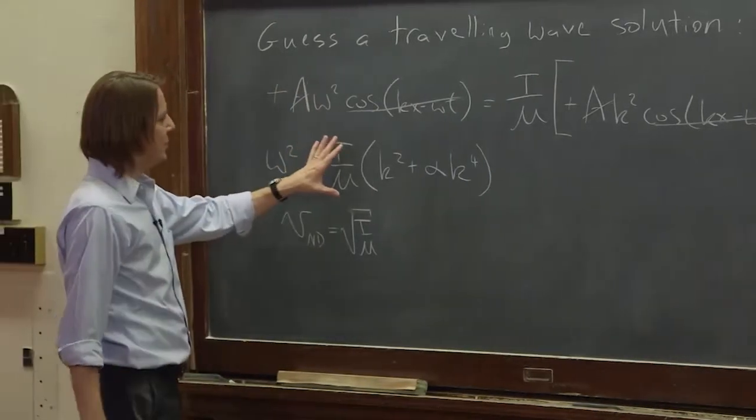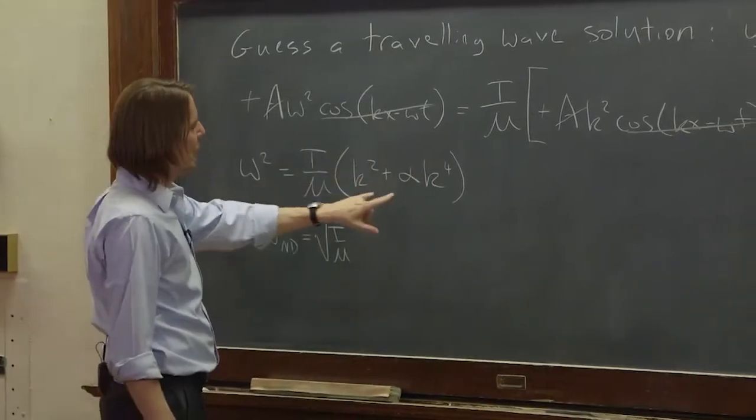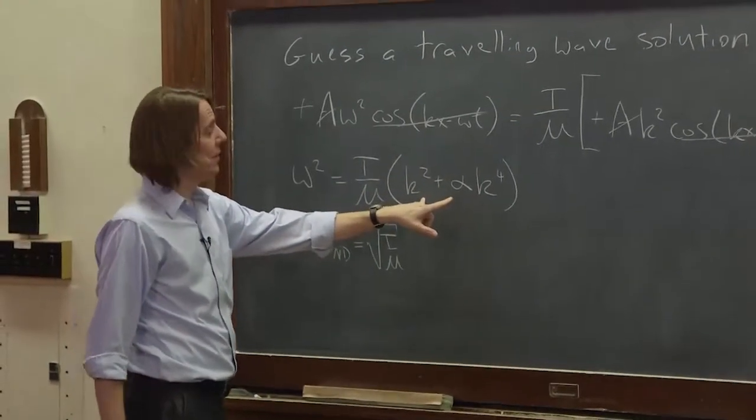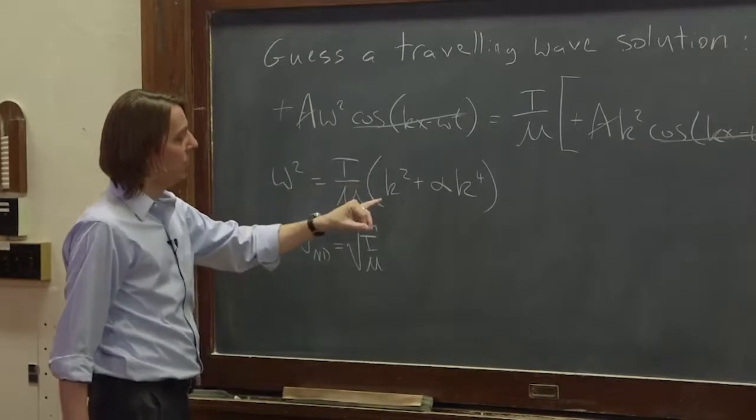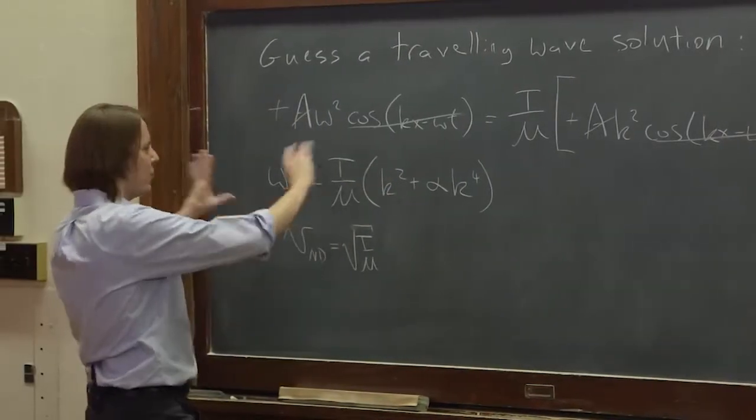And then alpha's already there. So if we say that's v squared, we have omega squared equals v squared times this thing. But we could pull a k squared out of that. So k could come out and it'd be 1 plus alpha k squared. So if you took the square root of this thing,